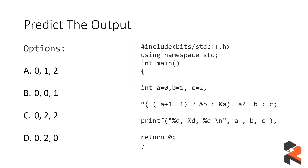Since the condition evaluated to true, we get the address of b. If it had been false, it would have been the address of a. The expression now evaluates to: *(address of b) = a ? b : c. This means we are now evaluating the value at the address of b.